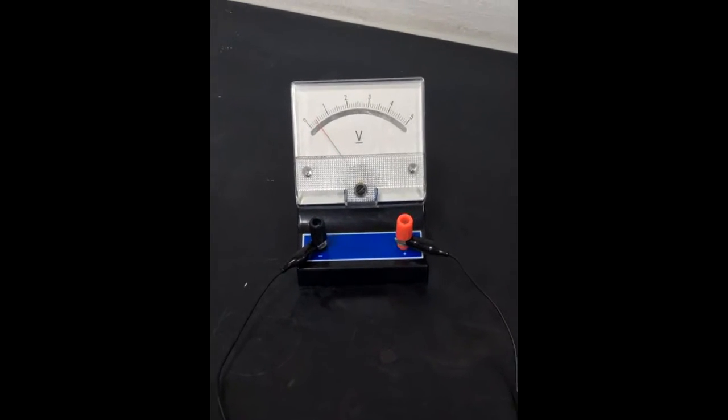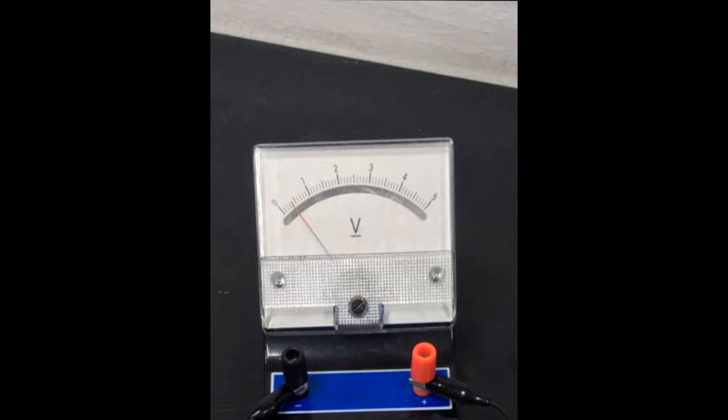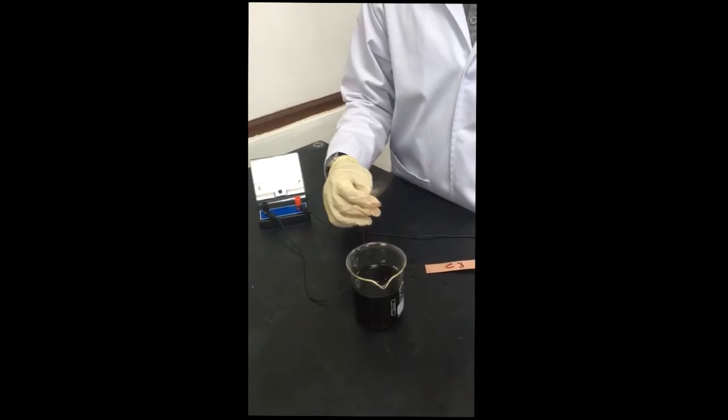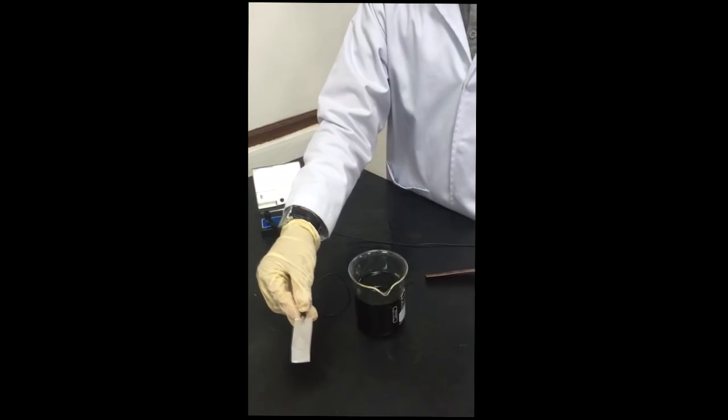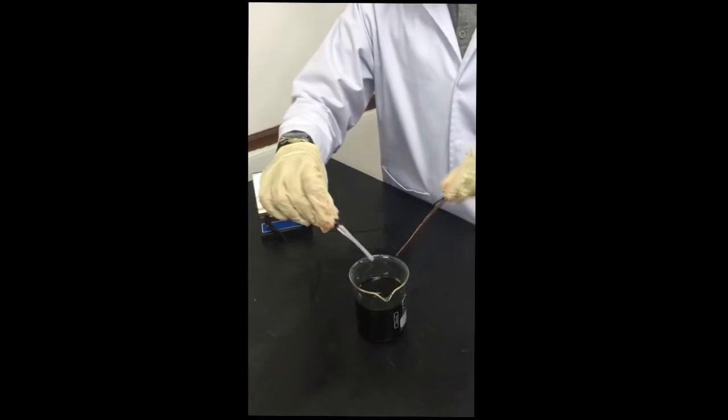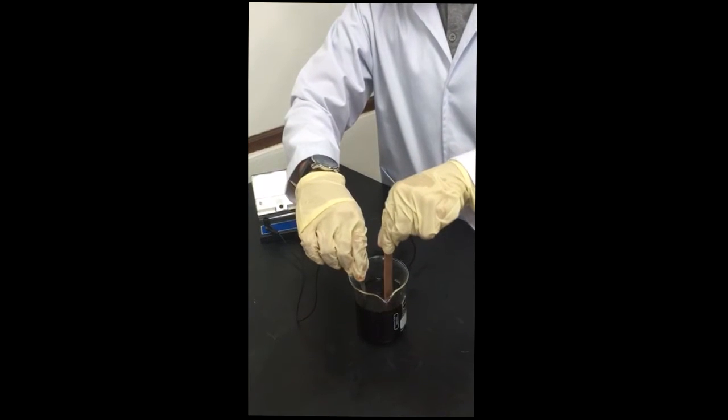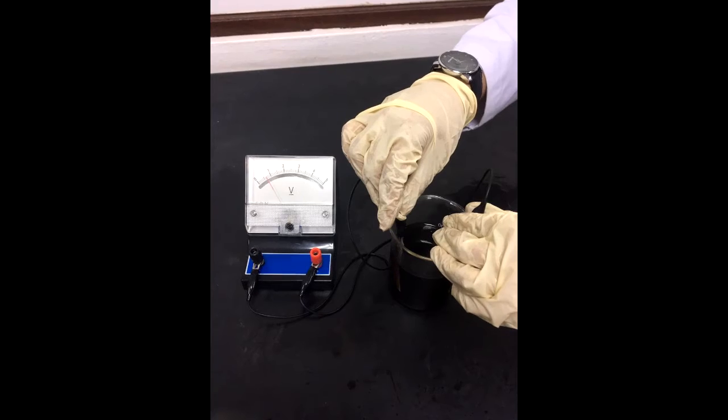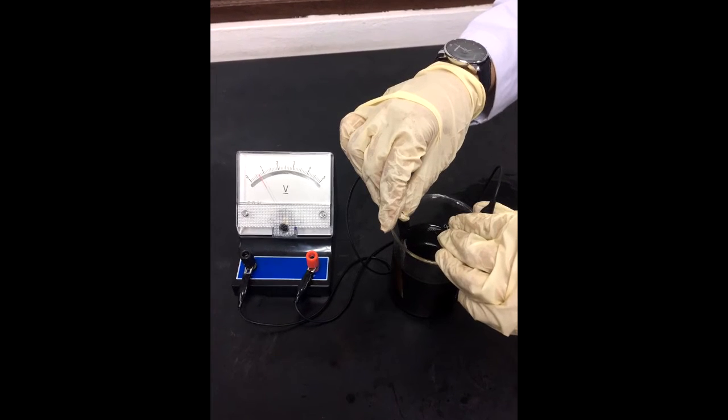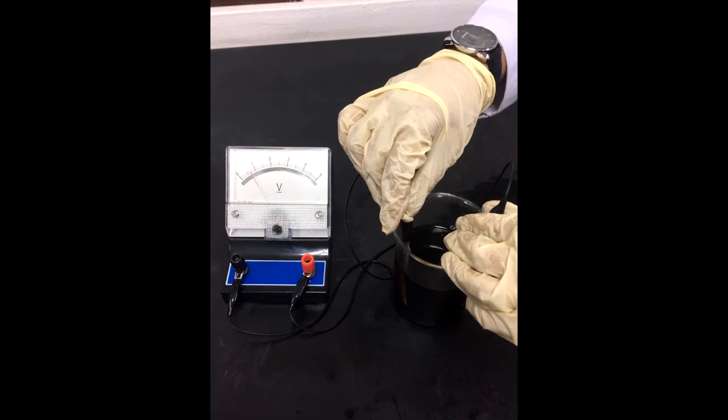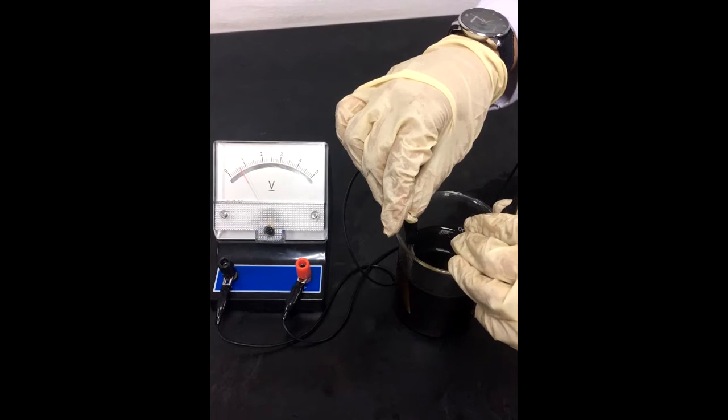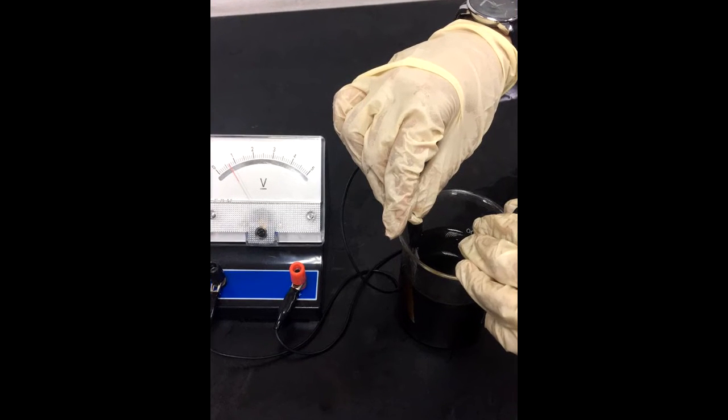Sixth, observe the voltmeter reading. By using the same volume of soda solution, replace the 8 cm of copper strip with 5 cm of copper strip. You will see that the voltmeter reading shows greater value when using more volume of soda solution.